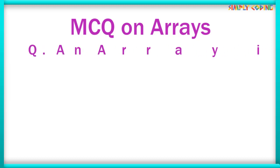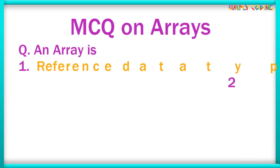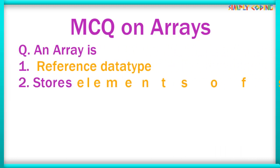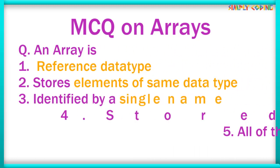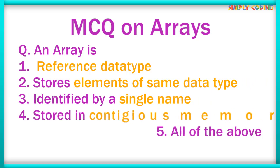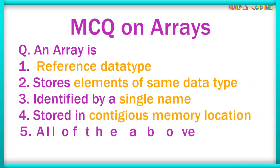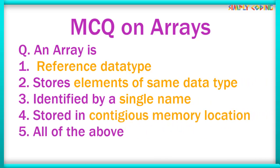The first basic question is: an array is a reference or composite data type. It has elements of the same data type. It is identified by a single name and stored in a contiguous memory location. Here, all of the above are true.